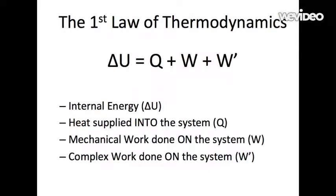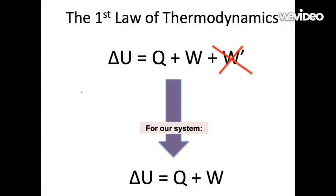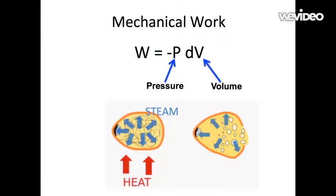The first law of thermodynamics implies that heat and work are a form of energy and that energy is conserved. The first law of thermodynamics is represented by this equation. Basically, what this equation means is that the change in internal energy, which is the total energy contained within a system, is equal to the amount of heat supplied into the system plus the amount of work that is done on the system by the surroundings. W prime represents the other types of work that we define to be complex. Since our system is simple, we can ignore the W prime term. The W term represents the mechanical work done on the system and it is defined by the following equation.